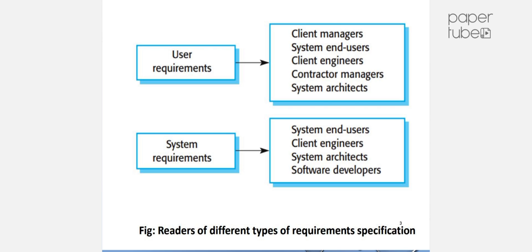System Requirements. System Requirements are a structured document setting out a detailed description of the system's functions, services, and operational constraints. This document defines exactly what is to be implemented.